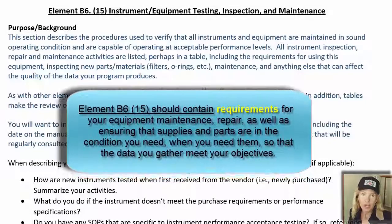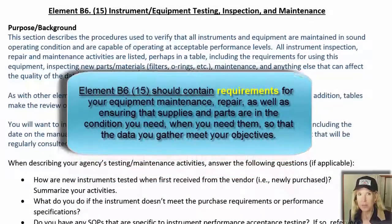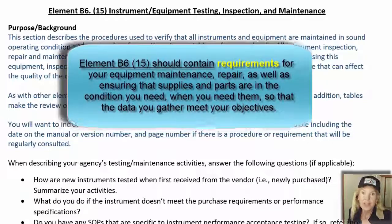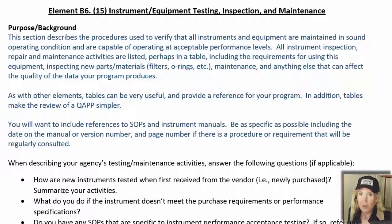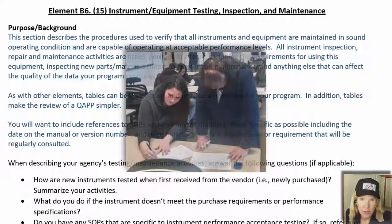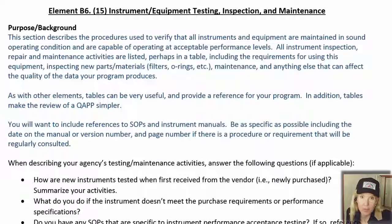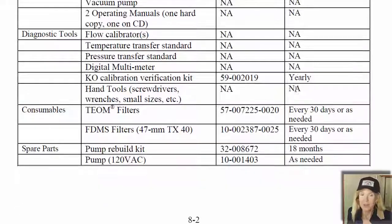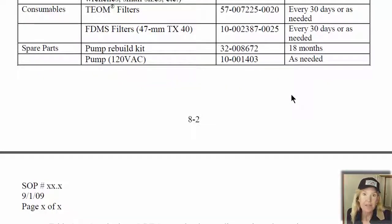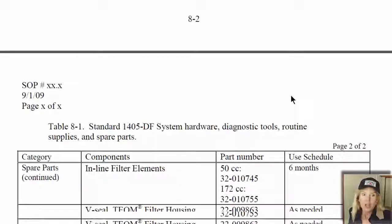Element 15 is all about your equipment. The hardest part is assembling all the material you'll need, so get a list of all the equipment you have including model numbers, serial numbers, and as many owner's manuals as you can find. You should be able to complete this section in a day. Remember, you don't have to present procedures — just the requirements — and a lot of times those are fastest to complete and review if they're in a table form.